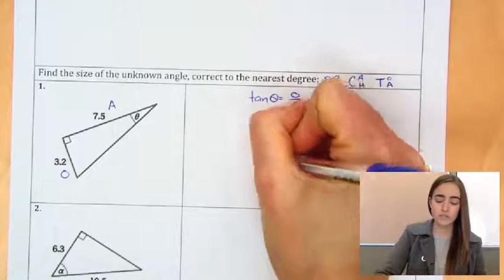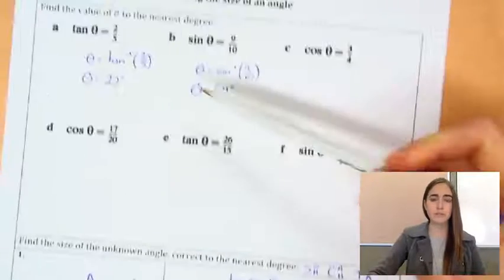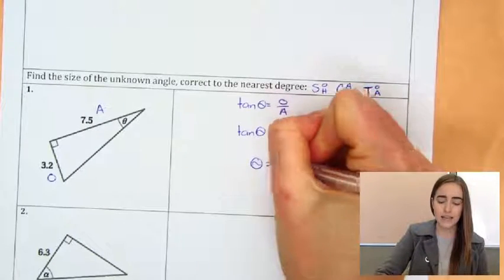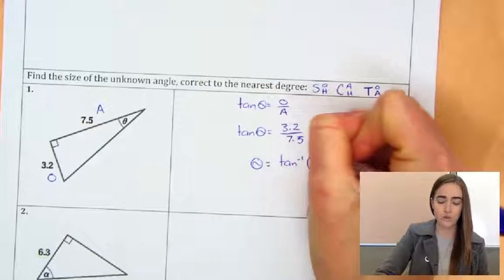Then to get theta on its own, now it's the steps that we were doing up the top here. So we've got a question that looks like that now, so theta will be tan inverse of that whole fraction.